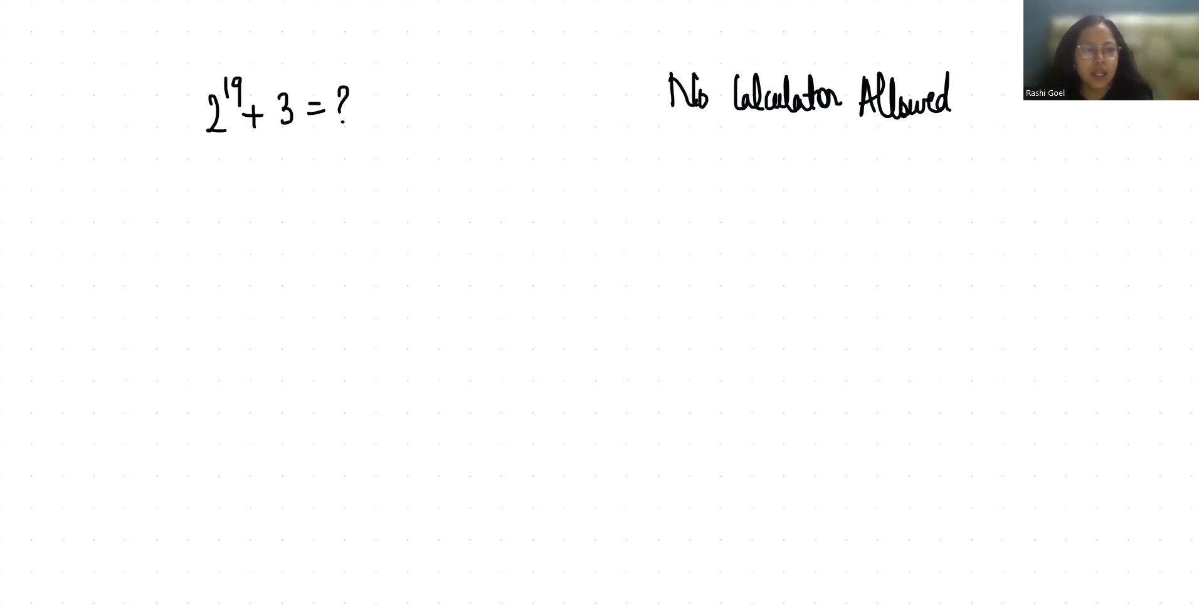First, this 19 I can break it as 18 plus 1. According to the exponent rule x power m plus n equals x power m times x power n, so 2 power 18 times 2 plus 3.